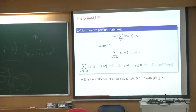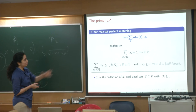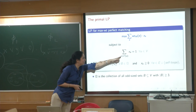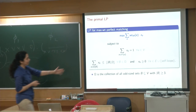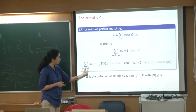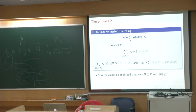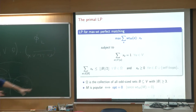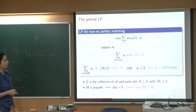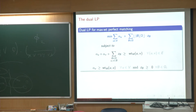Let's write the LP for max weight perfect matching. The objective is to find a matching that maximizes the sum of edge weights; x_e are our variables, it's a perfect matching, delta'(u) is just the set of edges incident to u including the self-loop. We also have odd set constraints: E[B] is the set of edges with both endpoints in set B (self-loops are not part of E[B]). This is a well-known LP for max weight perfect matchings, and M is popular if and only if the optimal value of this LP is 0. It's at most 0 and exactly 0 because M itself has weight 0 under this edge weight function. Its dual will be useful to us.